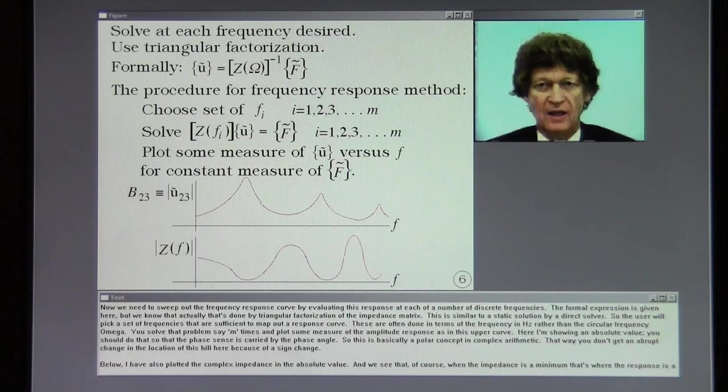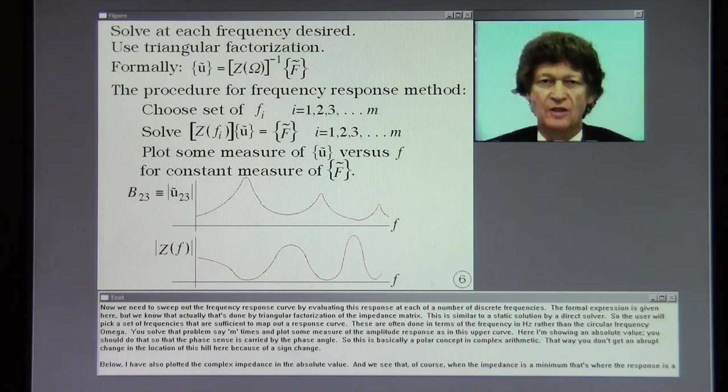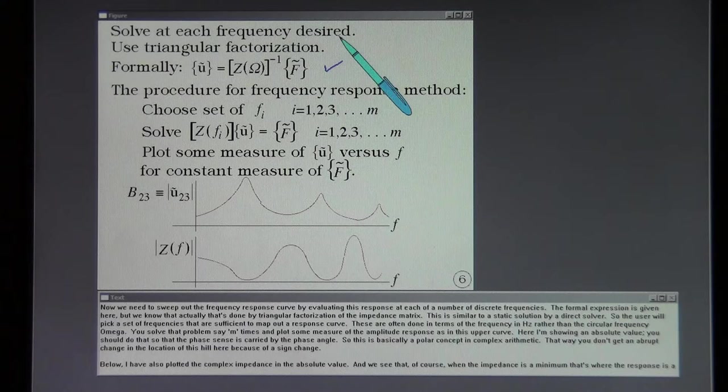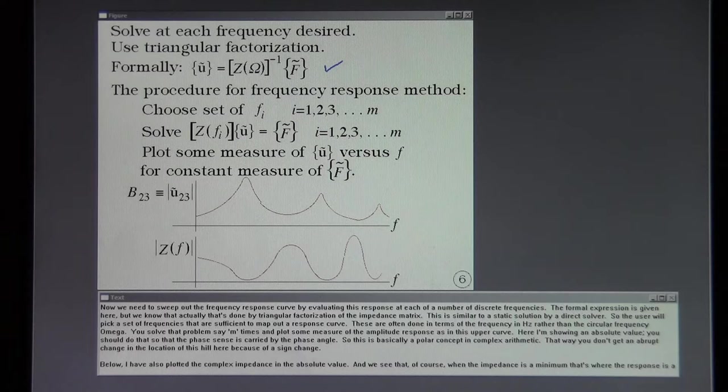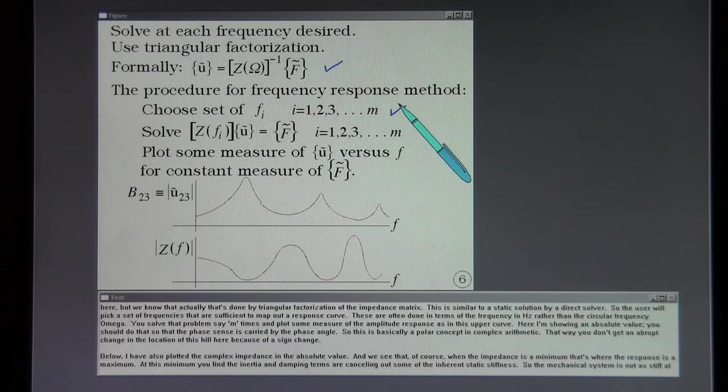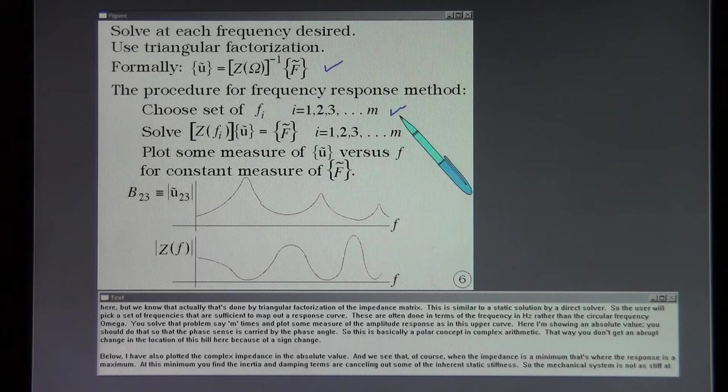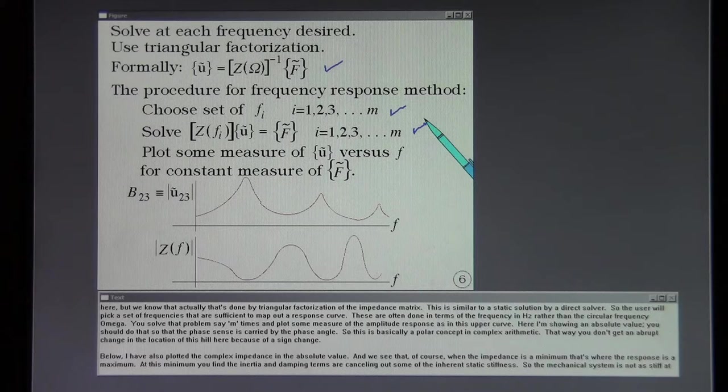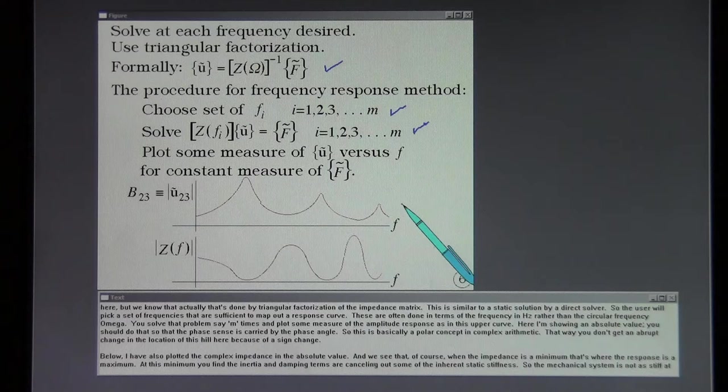Now we need to sweep out the frequency response curve by evaluating this response at each of a number of discrete frequencies. The formal expression is given here but we know that actually that's done by triangular factorization of the impedance matrix. This is similar to a static solution by a direct solver. So the user will pick a set of frequencies that are sufficient to map out a frequency response curve. These are often done in terms of the frequency in hertz rather than the circular frequency omega. You solve that problem say m times and plot some measure of the amplitude response as in this upper curve.